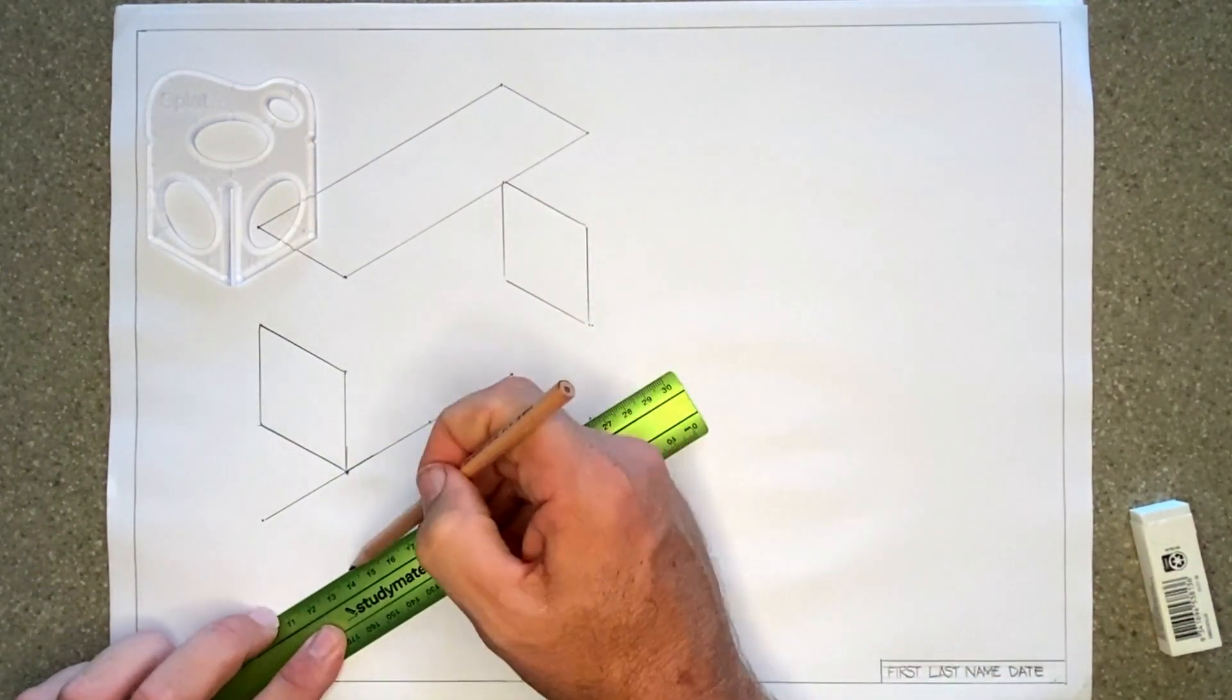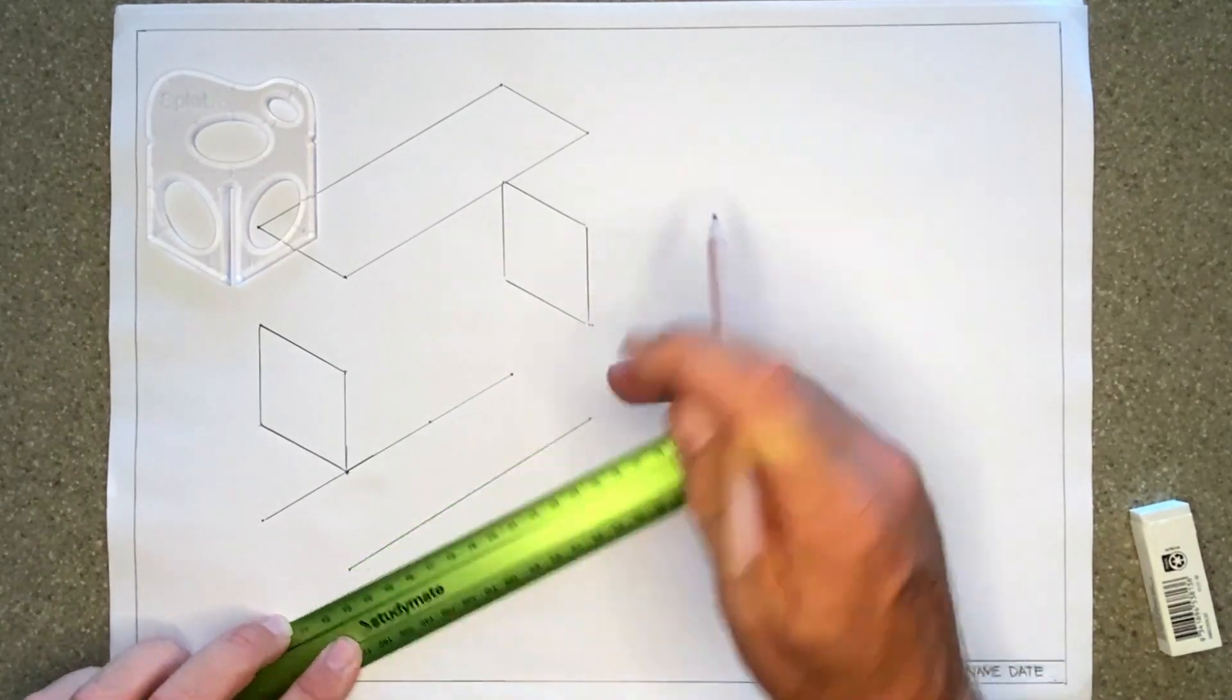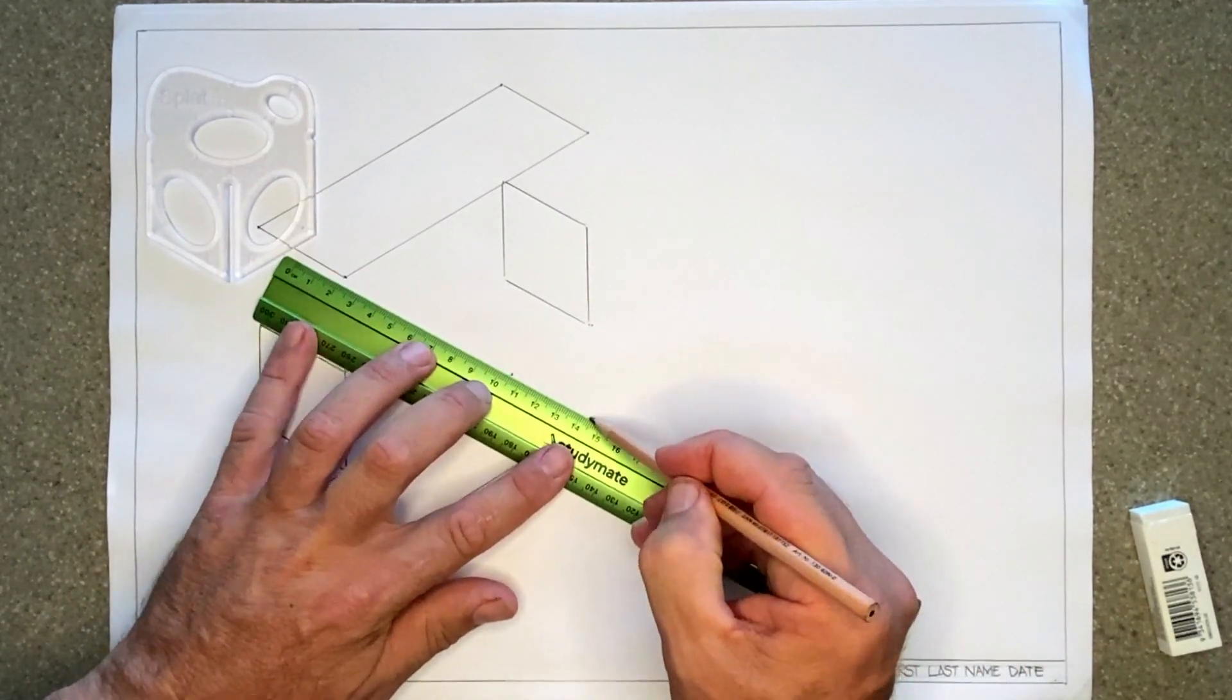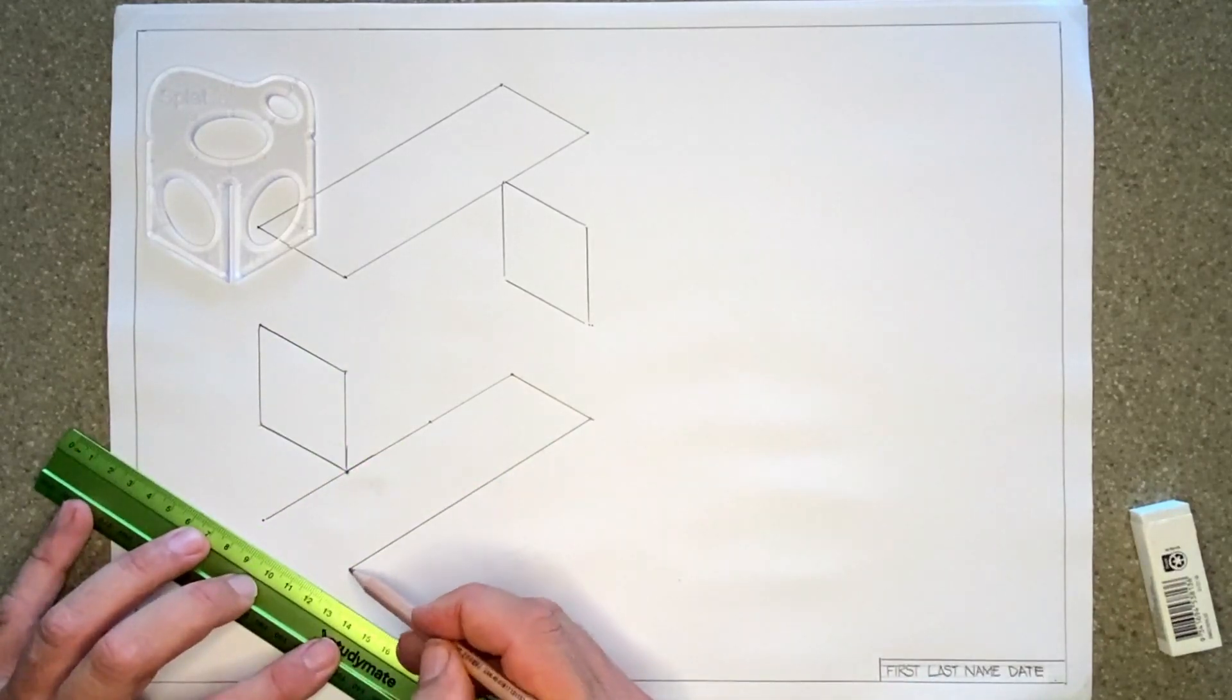So now I've got my four points, just like before. Let's connect those up. You'll probably notice your drawing isn't looking exactly like mine, and that is totally fine. Remember, these are quick drawings to show the parts exploded. That's all.